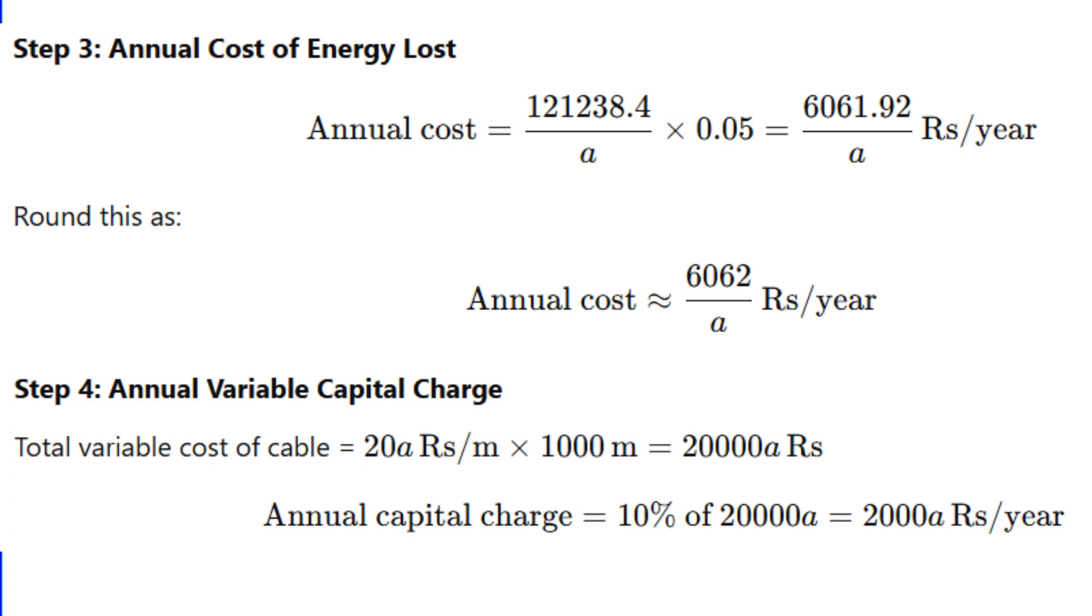Next, the cost of cable is 20A rupees per meter. For one kilometer, that's 1000 meters. So, total cost equals 20,000A rupees. Annual charge equals 10% of this, which is 2000A rupees.